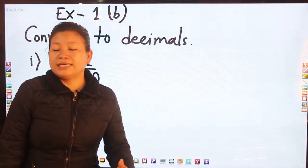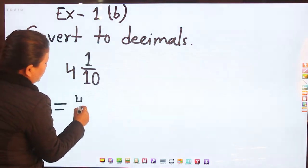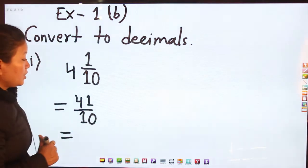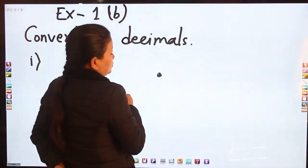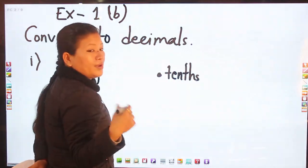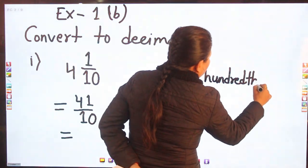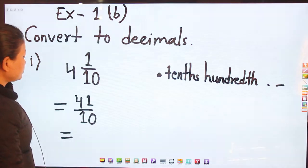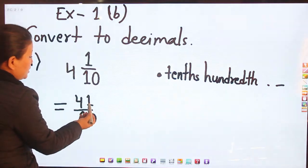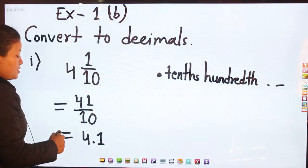That is 10 fours are 40, plus 1 is 41 by 10. So where to put the decimal? You know that after decimal we have tens, then hundreds, then thousands, and so on. So we put decimal before the ones digit. This is 41 — in the ones place we have 1, so we put decimal before the ones digit.